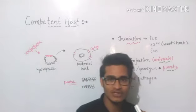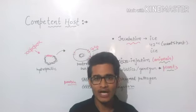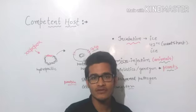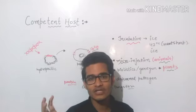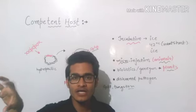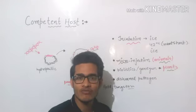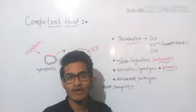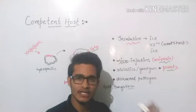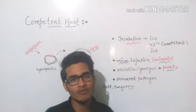The fourth method is disarmed pathogen. We have talked about Agrobacterium tumefaciens in the last lecture — we reduce its disease-causing tendency and choose it as a vector. We remove that particular harmful gene and insert our gene of interest into it, so that it sends the gene of interest into the body of the plant. Similarly, in the case of retroviruses, these are used for animal cells. We have already talked about both in detail in the last lecture on cloning vectors.